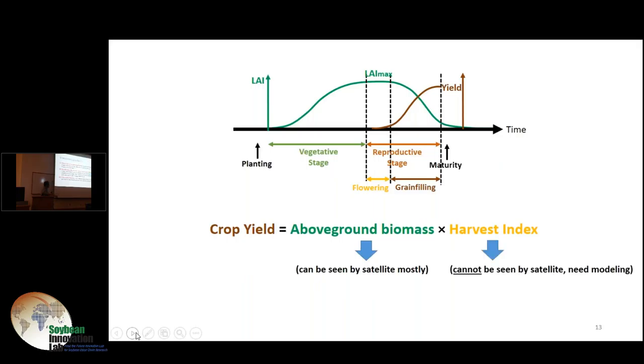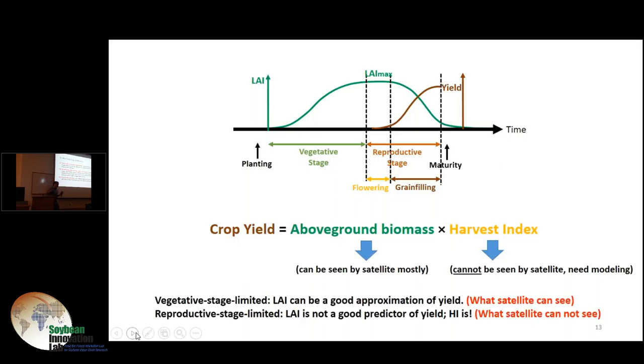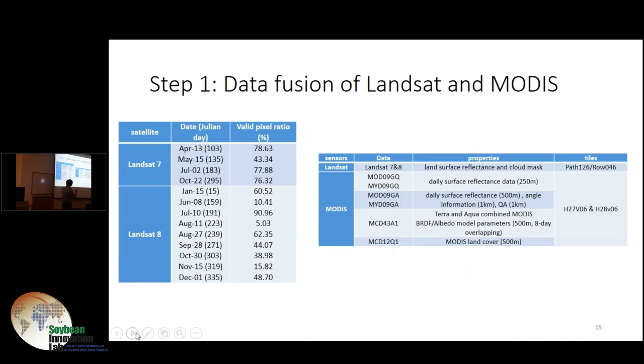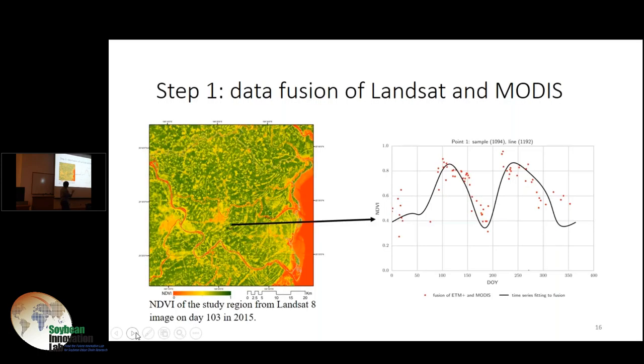What we did in this specific study is we first use the data set of Landsat and MODIS, then we identify the crop types, and finally we do crop yield forecasting estimation. We use tons of satellite data from both Landsat 7 and 8 for the second growing season of 2015 in mainland, and a bunch of MODIS data. The idea is to fuse these two data sets together.